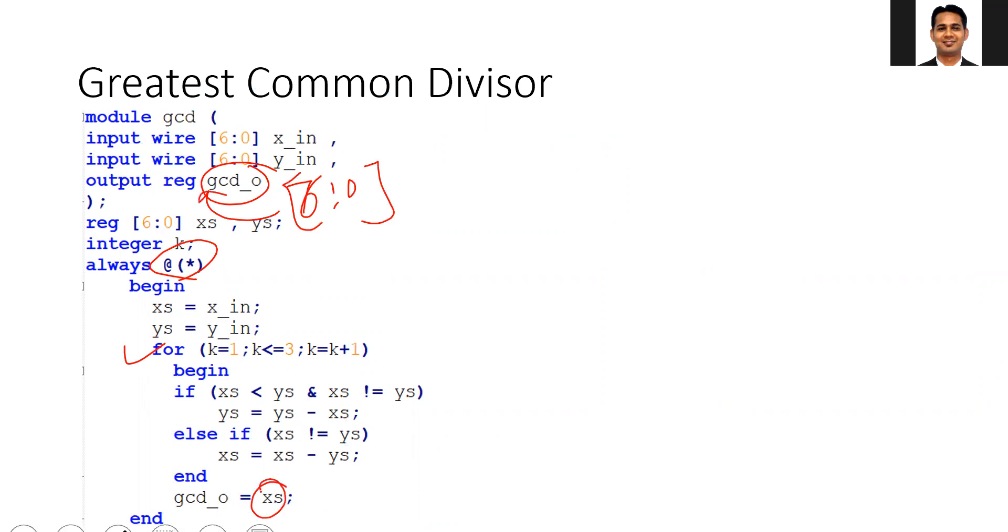This can be XS or YS because we will stop when XS is not equal to YS. In the while loop, the problem was we did not know how many iterations there were, so the tool says it is not synthesizable.